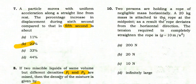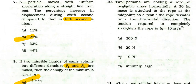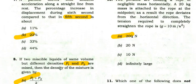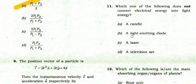Two persons are holding a rope of negligible mass horizontally, and a 20 kg mass is attached to the midpoint, causing the rope to deviate from horizontal. The tension required to completely straighten the rope — the right option is 200 Newtons.